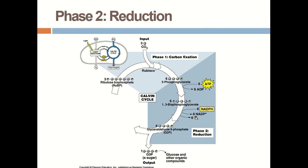The second phase of the Calvin cycle is reduction. It utilizes 6 molecules of ATP and 6 molecules of NADPH. Firstly, the 3-phosphoglycerate from phase 1 is converted into 1,3-bisphosphoglycerate by utilizing one ATP molecule. Then this 1,3-bisphosphoglycerate is converted into glyceraldehyde-3-phosphate by converting NADPH into NADP+ and releasing one inorganic phosphate. In total, 6 ATP and 6 NADPH are utilized for 6 molecules of 3-phosphoglycerate.